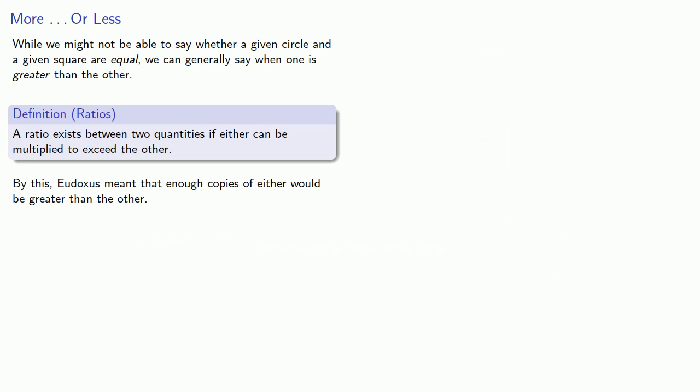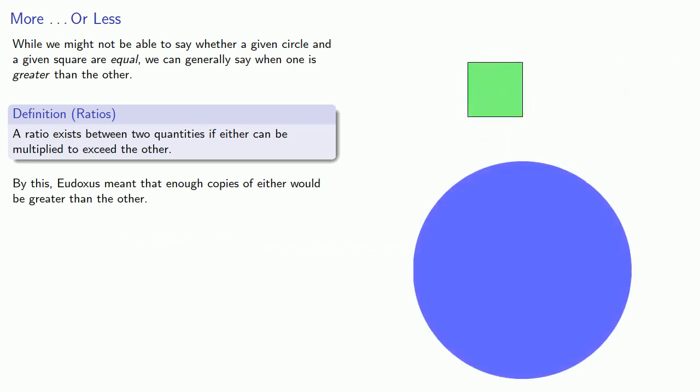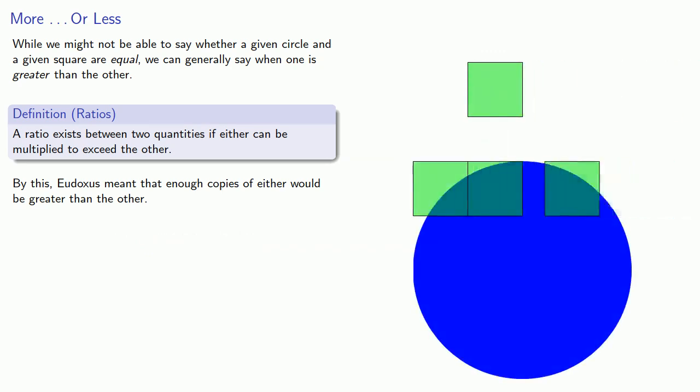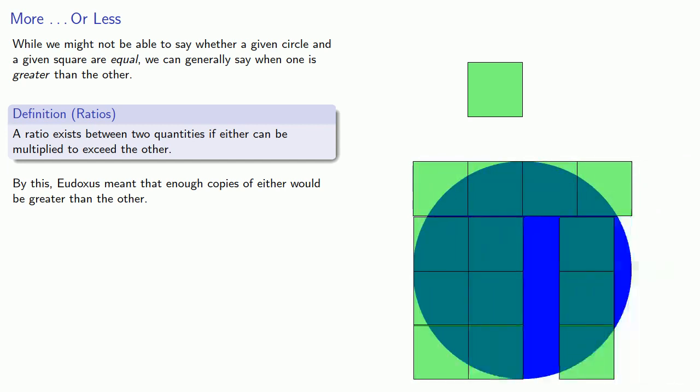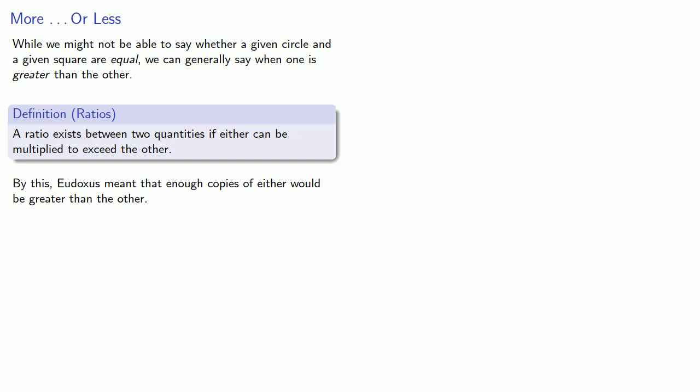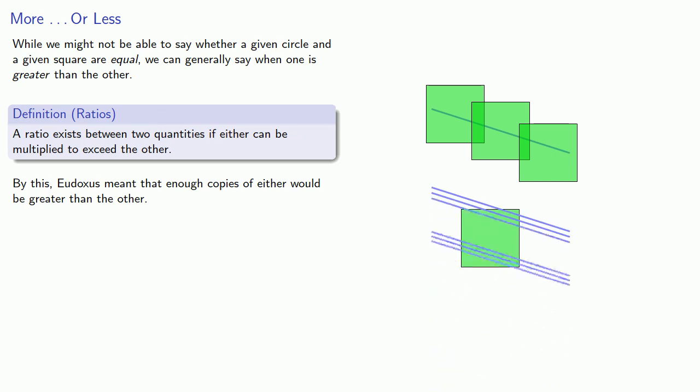So you could compare a small square with a very large circle, but you couldn't compare a line and a square. Because while we could use the square to exceed the line, we have to also be able to use the line to exceed the square. And no matter how many copies of the line we set down, the lines have zero thickness, so they'll never cover the square.